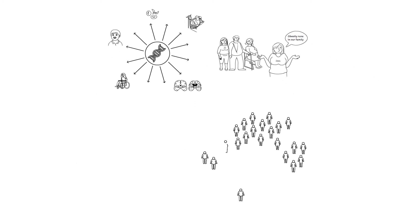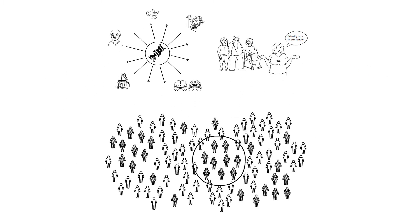And if we look at the population, we indeed can observe clustering of certain diseases, like obesity, in families. Yet when we draw the family tree, we do not recognize Mendelian inheritance patterns.